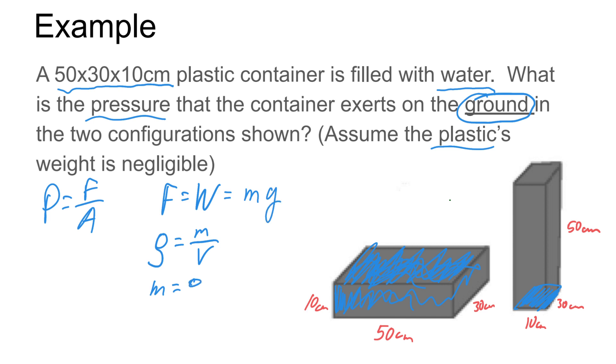So mass is going to simply be the density times the volume. So we're going to go density is 1000, this is water. And we'll multiply by the length times the width times the height. Now this is all in centimeters, so we're going to put 0.50, 0.30, 0.10 to get us to meters.